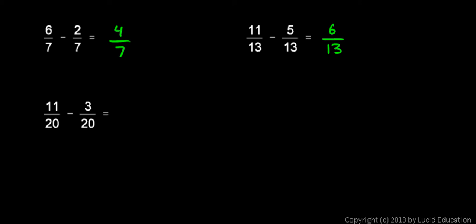And in this one, they both have a denominator of twenty, so they both represent twentieths. The eleven here means eleven of these things, eleven twentieths. And the three here means three of these things, three twentieths.